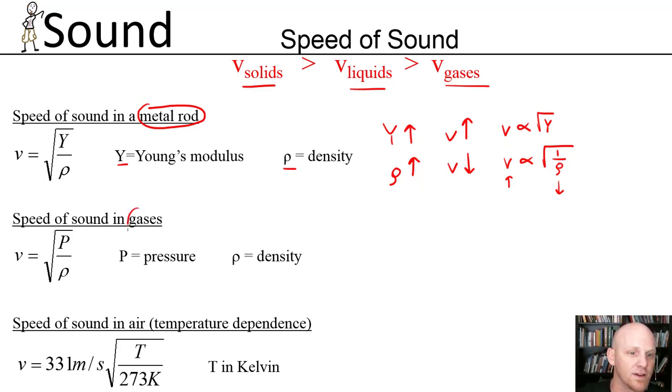We can also take a look at the speed of sound in a gas. There's a similar relationship. Here we find that the speed of sound in a gas depends on the pressure as well as the density of that gas. We see a direct relationship to the pressure, so as pressure goes up, your speed of sound goes up. But again, it's not a directly proportional relationship.